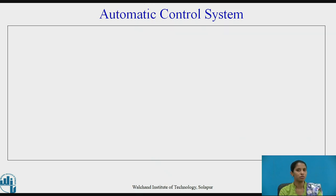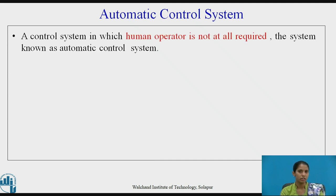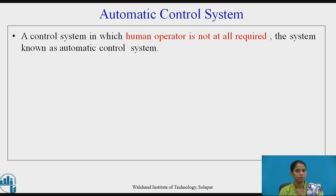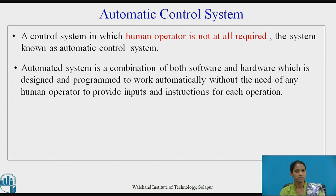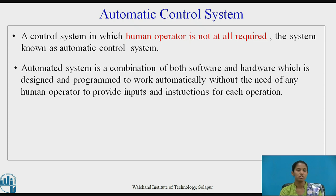Now let us see automatic control systems. A system in which a human operator is not at all required is known as an automatic control system. An automated system is a combination of both software and hardware which is designed and programmed to work automatically without the need of any human operator to provide inputs and instructions for each operation.